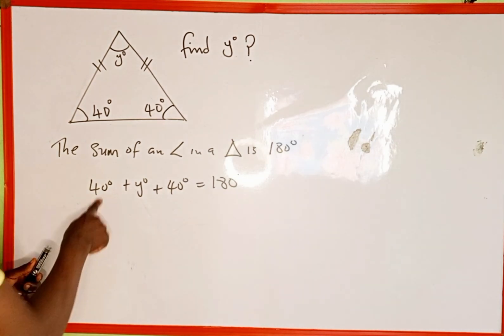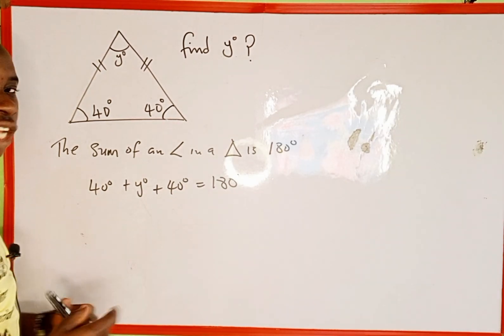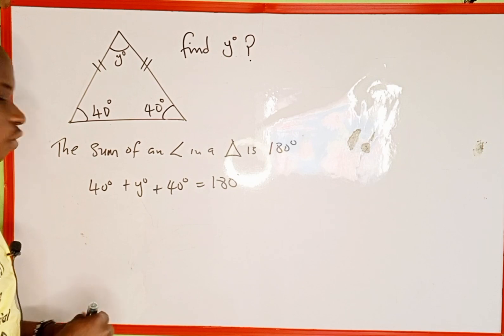So the next thing we are going to do is to add these two 40 degrees together and take it to the right hand side of the equation. Then we solve for y degrees.